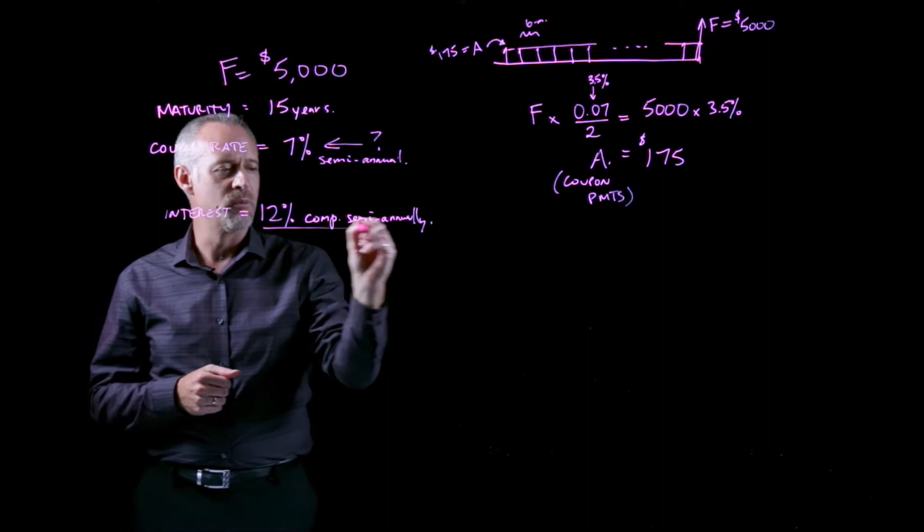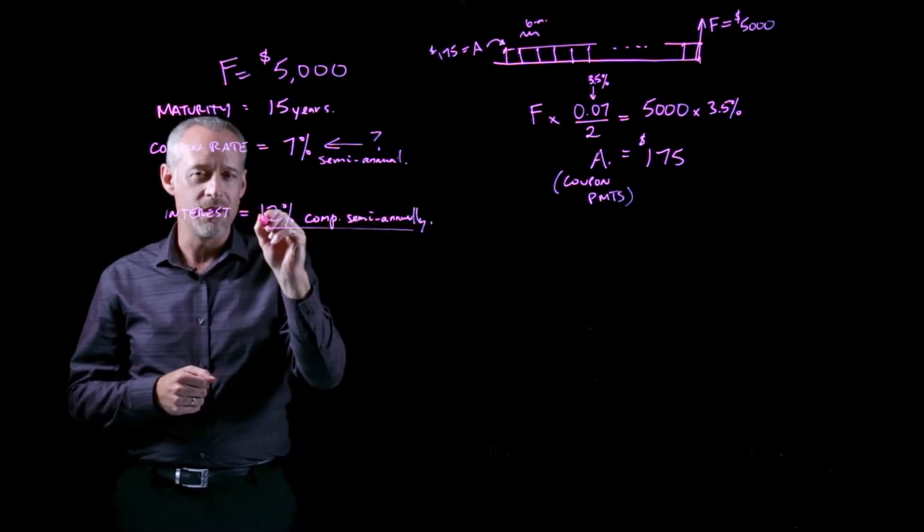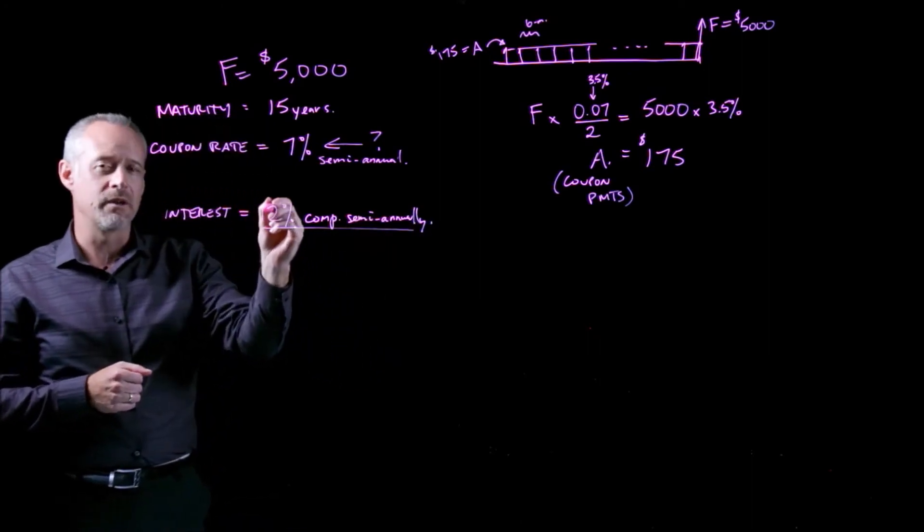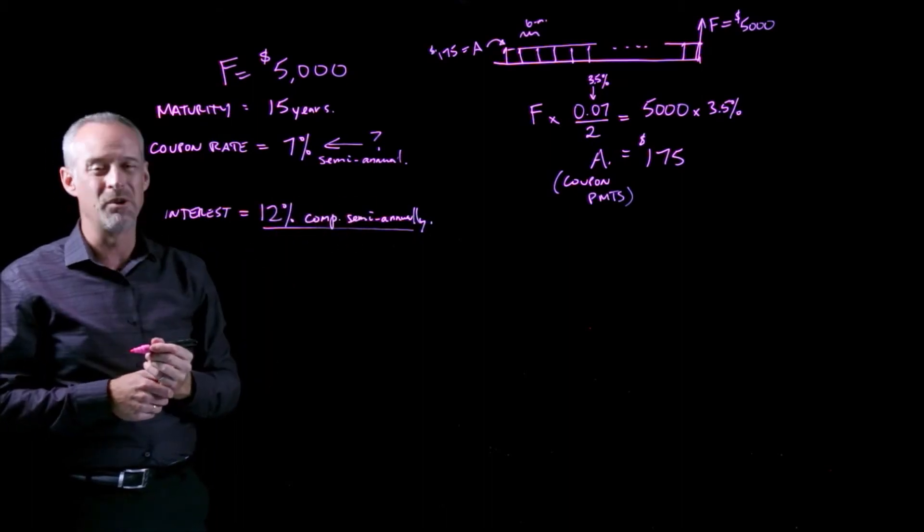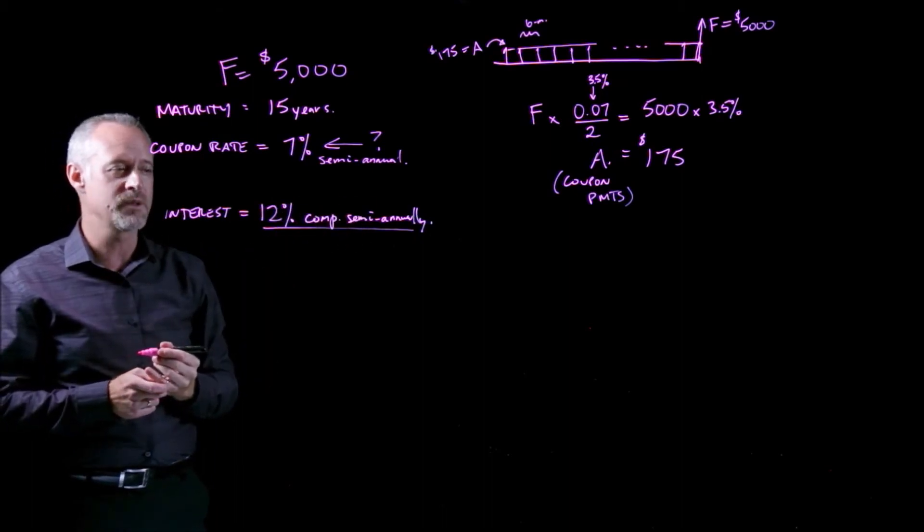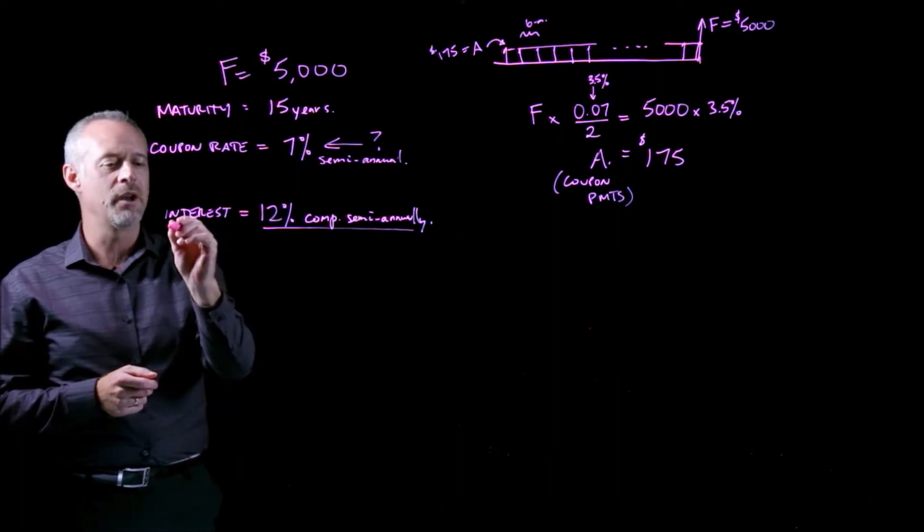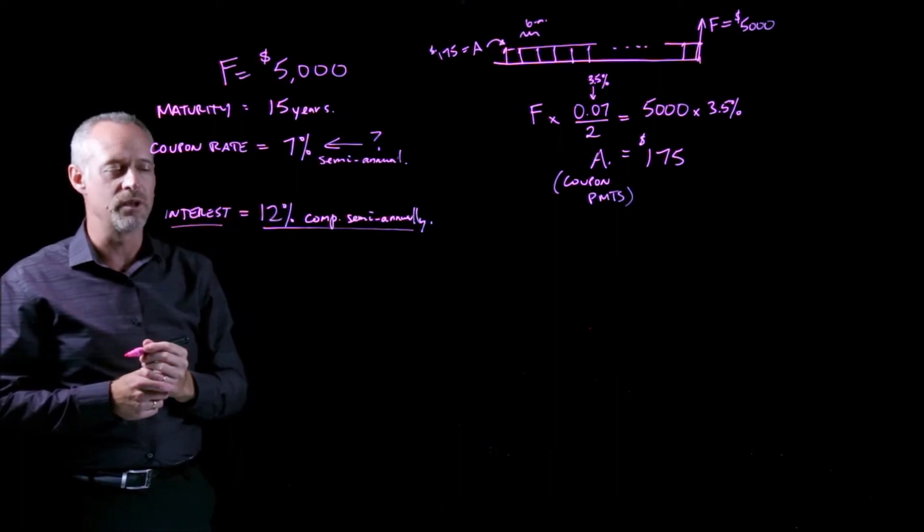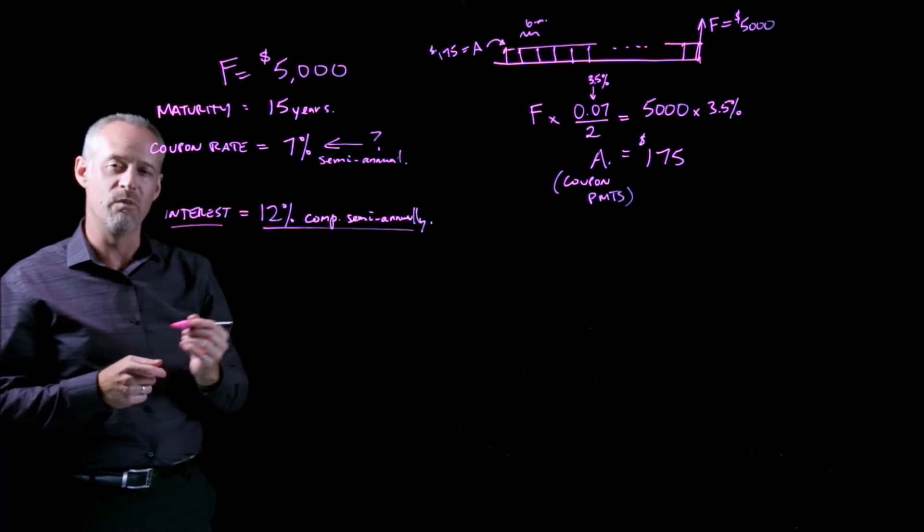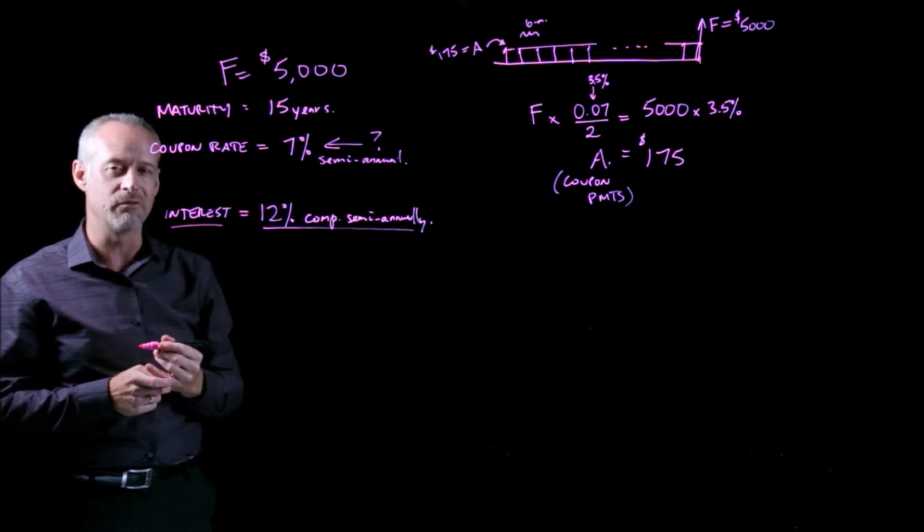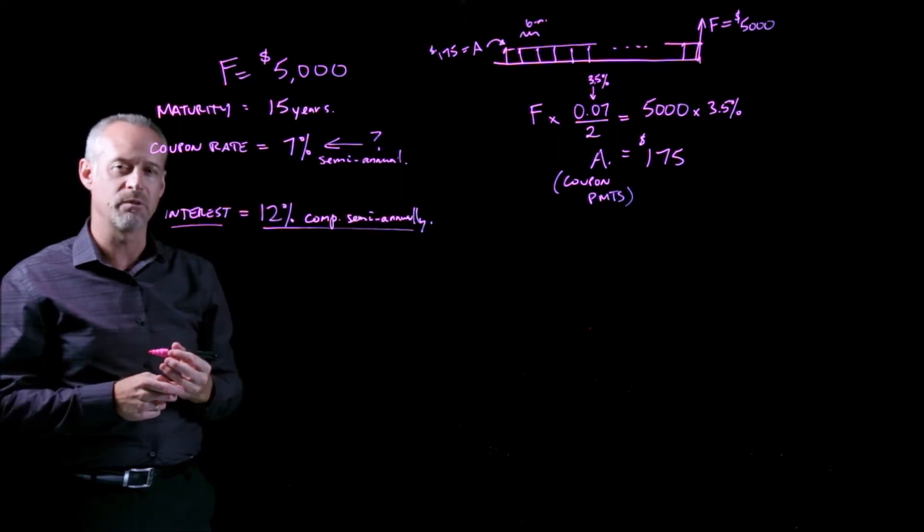As you'll see in a moment, quoting the interest rate as a 12% compounded semi-annual amount really makes the problem a lot simpler. If you're given a bond problem and you're not given an interest rate quoted as semi-annually, you may need to calculate the effective semi-annual rate or make some other modifications related to the manipulation of the interest rate.